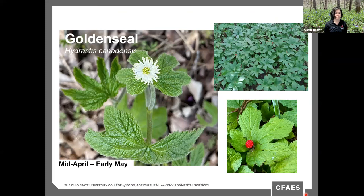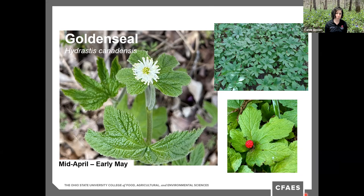Golden seal blooms from mid-April to early May. It's in the buttercup family and grows in mesic forests under deciduous trees, reaching six to twenty inches tall with maple-like shiny green leaves. The stem is terminated by a single white flower followed by a tight cluster of red fruit that resembles a raspberry. The plant grows in rich, moist forest, but unfortunately it is over-collected by the herbal industry, which has had a negative impact on many native populations. Golden seal has a long history as a medicinal herb and remains popular even today.